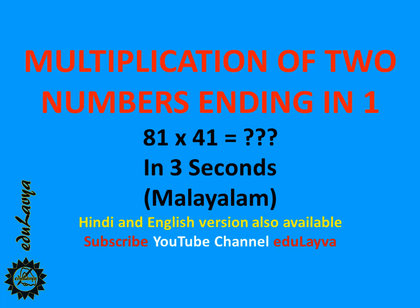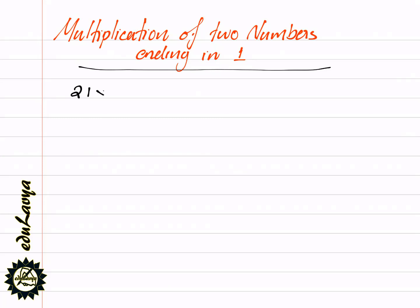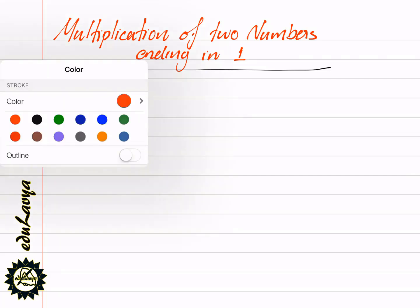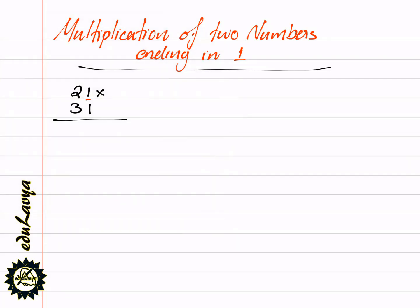Hello friends. Multiplication of 2 numbers ending in 1. What is it? For example, 21 into 81. This number ends in 1.